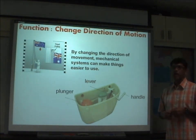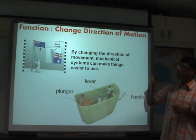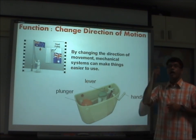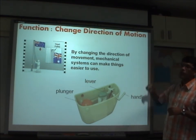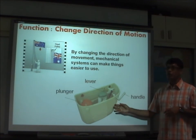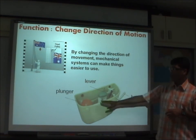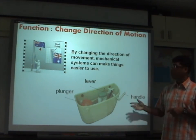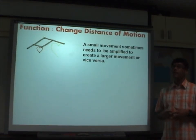For the change of direction of motion — many of you would have seen student counselors raising a flag at the parade square. The pulley system at the top of the flagpole provides a change of direction of motion: you pull the string down and the flag rises. Another good example is the cistern system in a toilet — as you push the handle down, the mechanism releases the water. In that way the mechanism gives you a change of direction of motion.